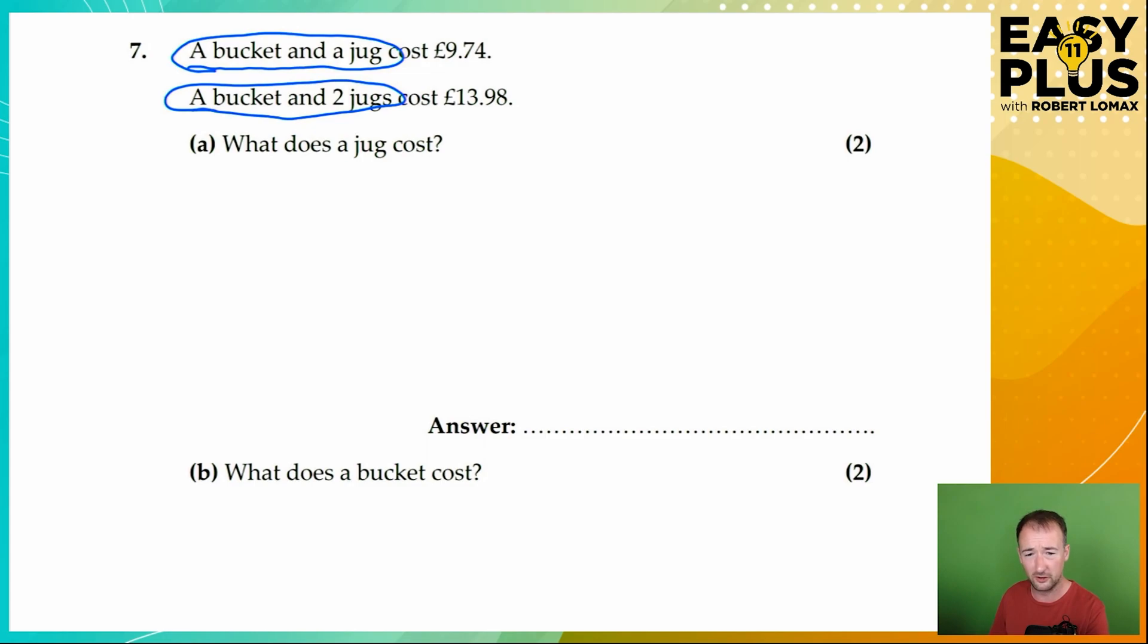So let's think about this bucket and two jugs. That really means... So put like this, you can see that a bucket and two jugs is a bucket and a jug and another jug. And we know that a bucket and a jug cost £9.74.